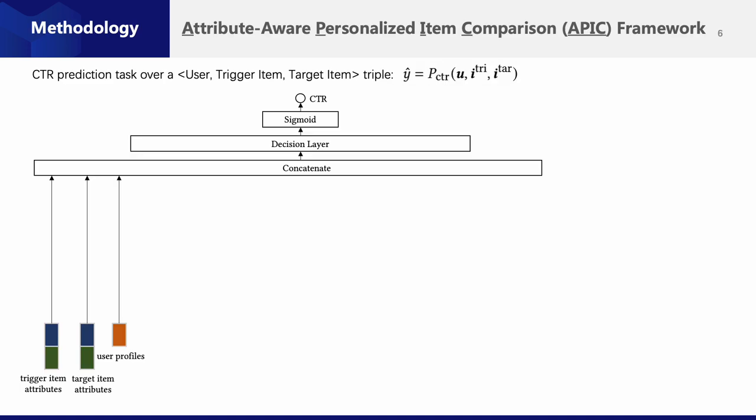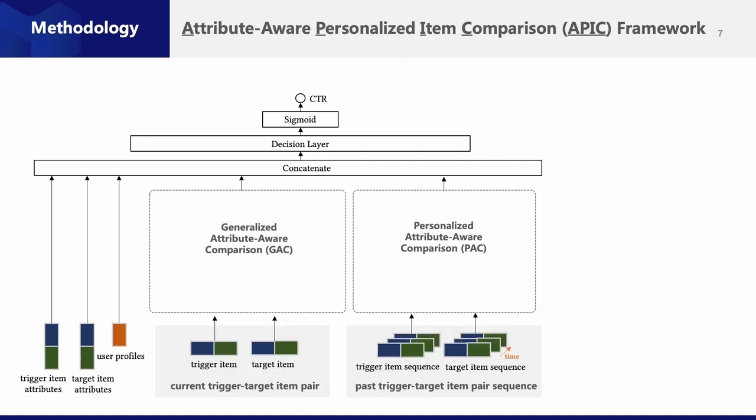In order to address both challenges, we formulate a CTR prediction task over a user-trigger item-target item triple and construct the foundation structure. We then propose two modules. The generalized attribute-aware comparison module works on the current trigger-target item pair, which aims to learn the general preference on item attribute values.